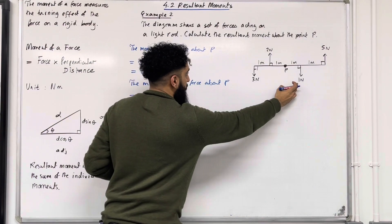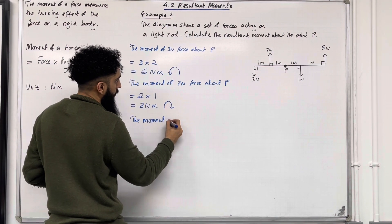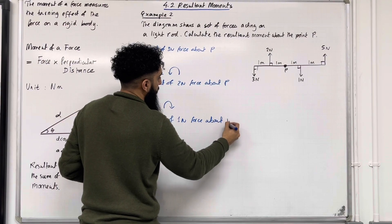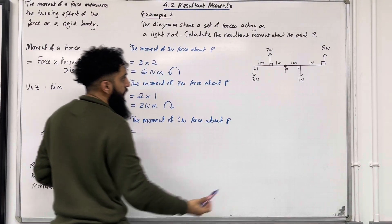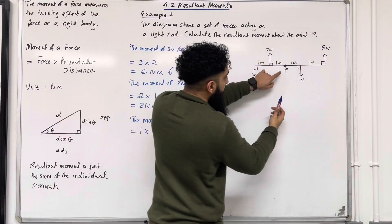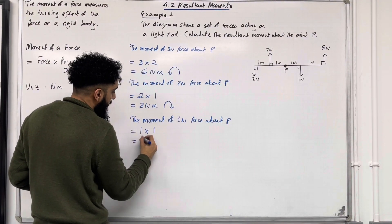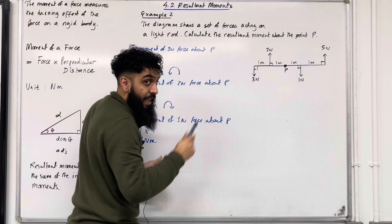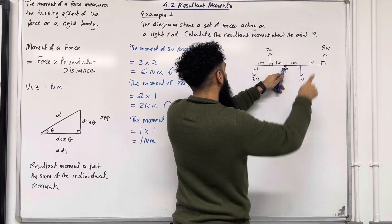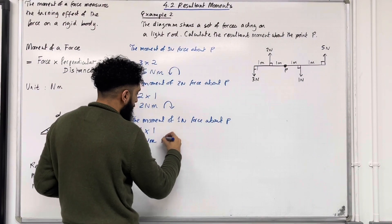Moving on to the 1 newton force: the moment of the 1 newton force about P equals 1 newton multiplied by the perpendicular distance from P, which is 1. So 1 times 1 is 1 Newton meter. If I hold on to point P and apply this 1 newton force, it will take the entire body clockwise. So we have 1 Newton meter going clockwise.